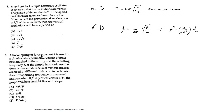For question 6: a linear spring of force constant K is used in a lab experiment. A block of mass M is attached to the spring and the resulting frequency F of simple harmonic oscillations is measured. Blocks of various masses are used and the corresponding frequency is recorded. If F² is plotted versus 1/M, the graph will be a straight line. The frequency formula gives F² equal to a constant times 1/M, so the slope of the F² versus 1/M graph is K/(4π²). The answer is D.